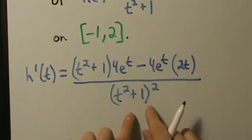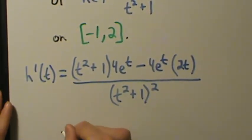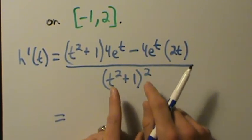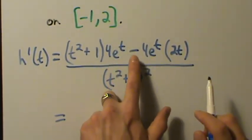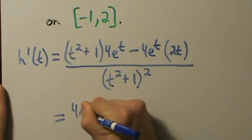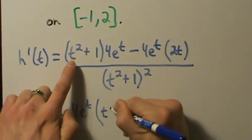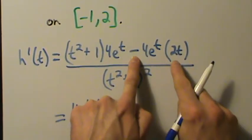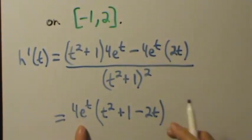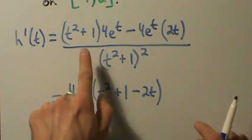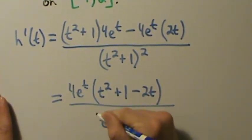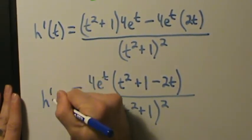We leave the bottom as it is — we pretty much almost never want to expand that — but we can simplify the top. The numerator has something times 4e to the t minus something else times 4e to the t, so let's pull out the common factor of 4e to the t. Pulling that out, we're left with t squared plus 1 minus 2t. So h prime of t equals 4e to the t times (t squared minus 2t plus 1), all divided by (t squared plus 1) squared.